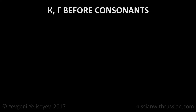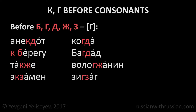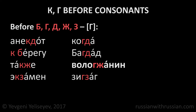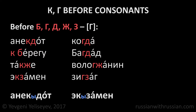And now let's talk about pronunciation of the letters К and Г before other consonants. As I said in the previous lesson, before such voiced sounds as Б, Г, Д, Ж, and З, the consonants become voiced. In this case, the letters К and Г have the sound Г. Анегдот, к берегу, также, экзамен, когда, багдад, волокжанин, зигзак. If it's difficult for you to pronounce these clusters, you may insert a very short И between the consonants. Анегдот, анегдот. Эгзамен, экзамен.